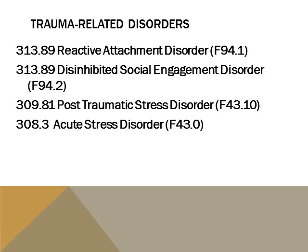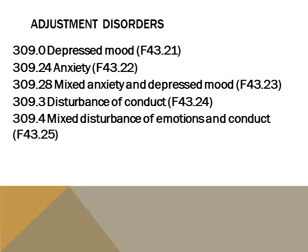ICD-10 places the first two diagnoses in this group in the section called behavioral and emotional disorders with onset usually occurring in childhood and adolescence, and the second two in the neurotic, stress-related, and somatoform disorders section. In addition to the five types of adjustment disorder listed, ICD-10 also includes F43-20, adjustment disorder with a brief depressive reaction.